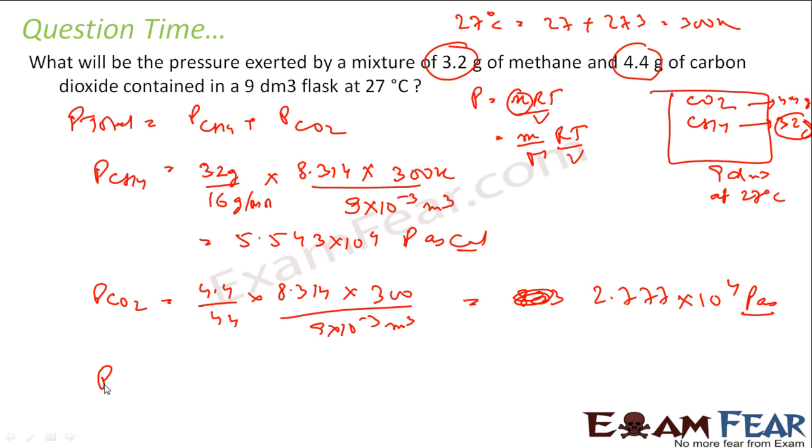So the pressure total will be, you add these two values, total pressure, because this is nothing but methane pressure plus carbon dioxide pressure, that is 5.543 into 10 to the power 4 plus 2.777 into 10 to the power 4 Pascal, that is nothing but 8.32 into 10 to the power 4 Pascal.